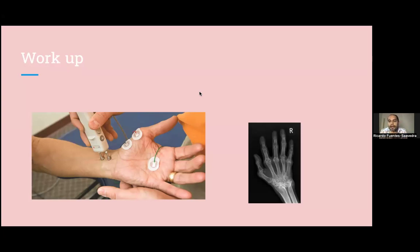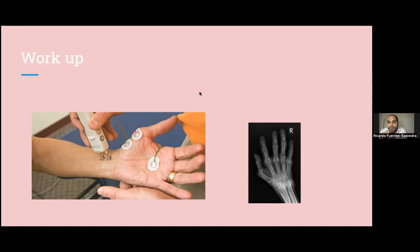The more specific tests in clinic would be Tinel's — percussion over any nerve, which we can do at the wrist for the median nerve or at the elbow for the ulnar nerve — and the Phalen's test, putting the wrist in excessive flexion to stress the nerve, which will irritate it and reproduce symptoms. The most important feature is reproducing the patient's symptoms — that's a positive test. We could also do carpal compression.